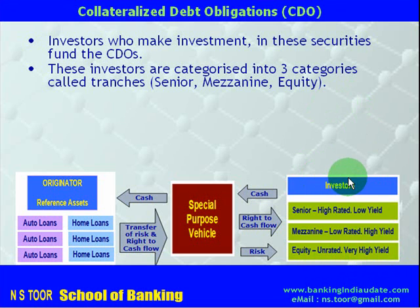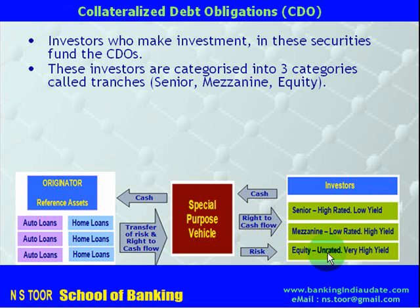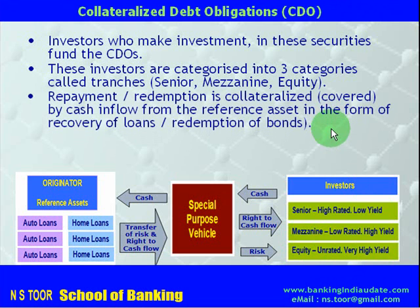Equity assets carry very high yield. To summarize: senior investors have rights over high rated securities with low yield; mezzanine investors have rights over low rated securities with high yield; and equity investors have rights over unrated assets with very high yield. The repayment or redemption of these CDOs is covered by recoveries or cash inflows from the reference assets.